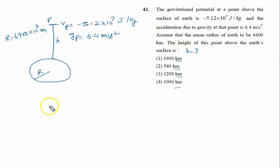We know that potential is a scalar quantity, and potential at any height h is given by minus GM upon r plus h. This value is given to us as minus 5.12 times 10 raised to the power 7.